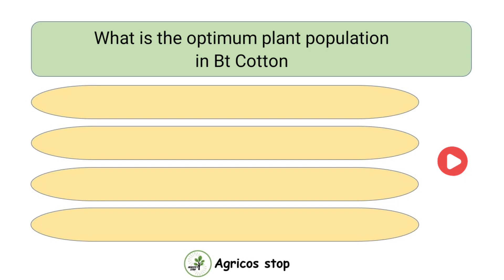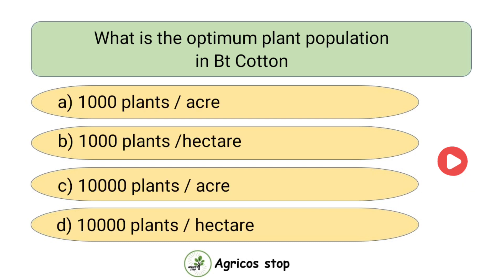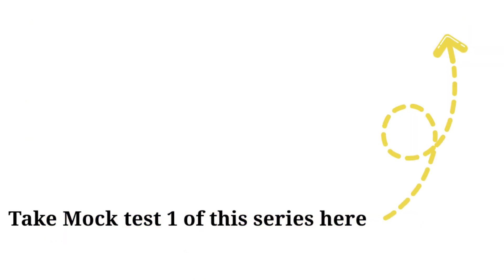What is the Optimum Plant Population of Bt Cotton? Options are 1,000 plants per acre, 1,000 plants per hectare, 10,000 plants per acre, and 10,000 plants per hectare. The answer is 10,000 plants per hectare. The optimum plant population of Bt Cotton is 10,000 plants per hectare.